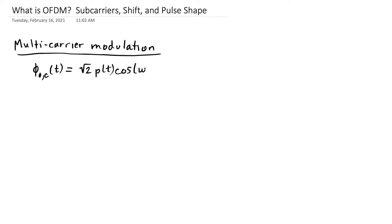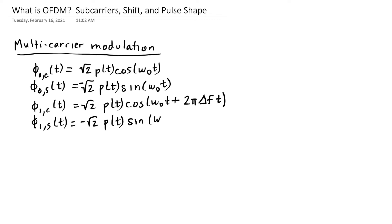That is, we have a cosine and a sine at each of capital B different frequencies. The first set of basis functions: the first two are square root of 2 p(t) cosine of omega naught t, and minus square root of 2 p(t) sine omega naught t. Then the next pair of basis functions are the same, except they're at a frequency omega naught plus 2 pi delta f.